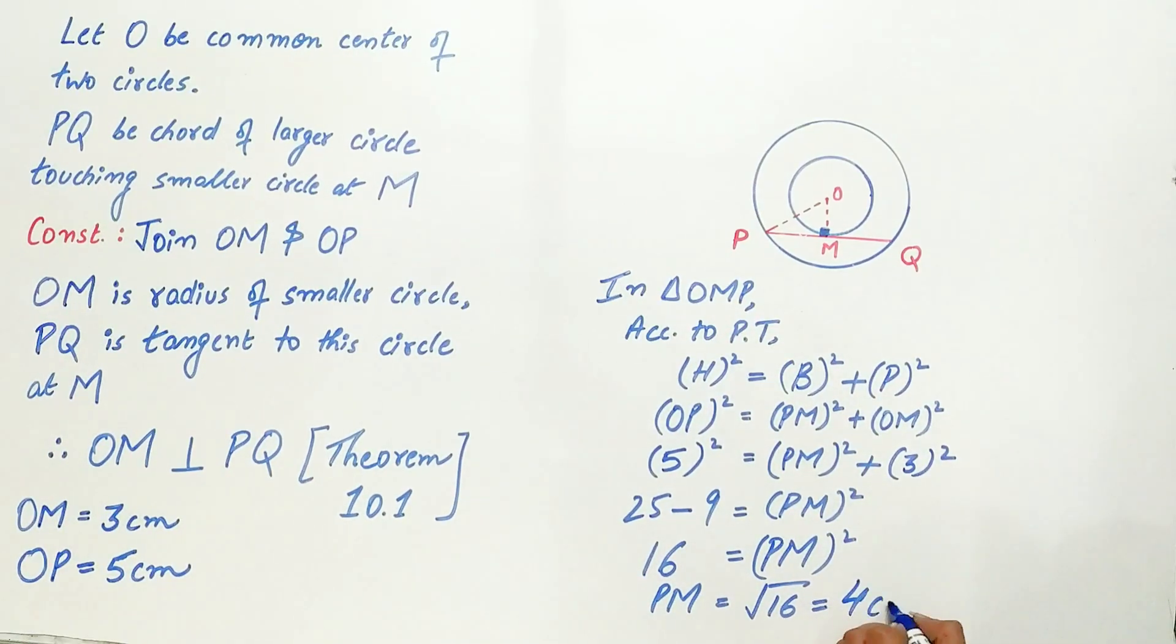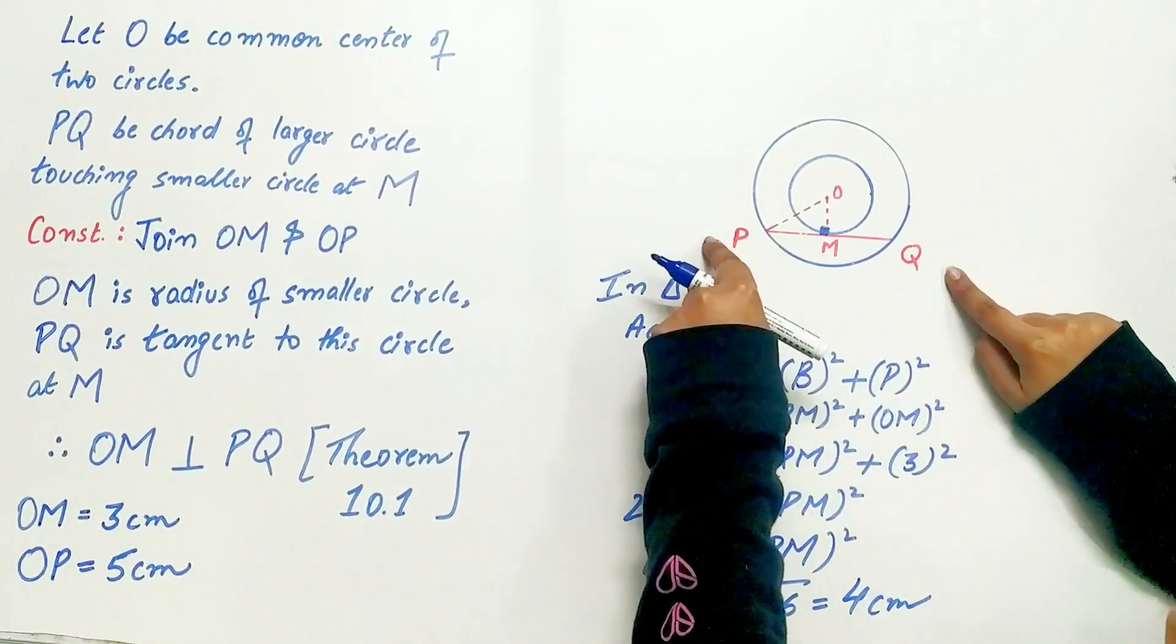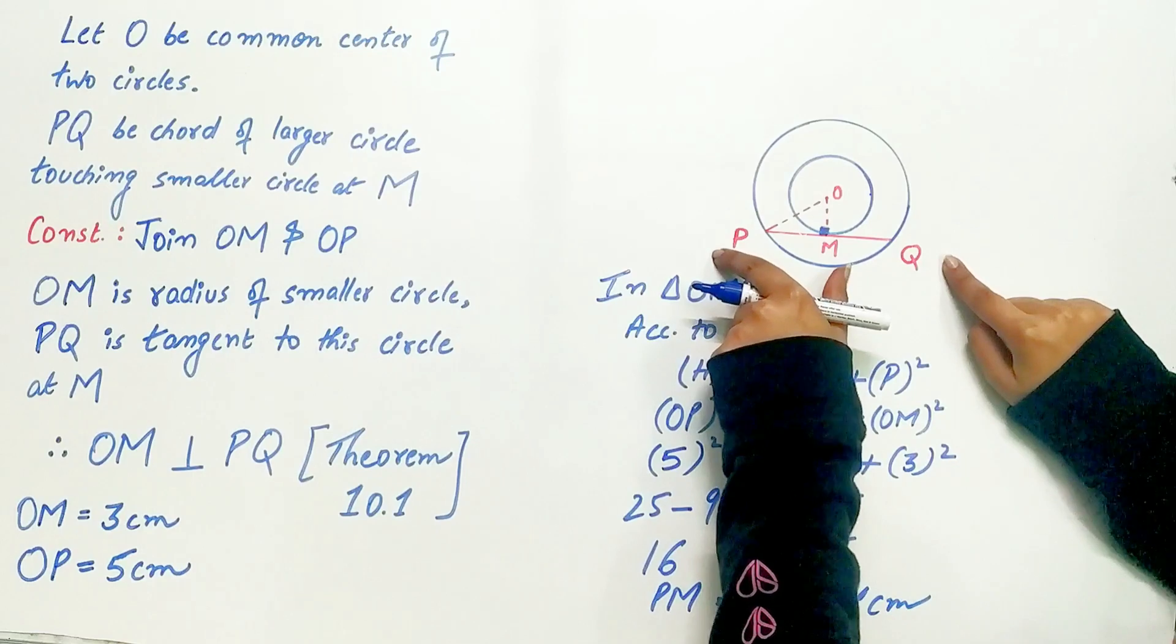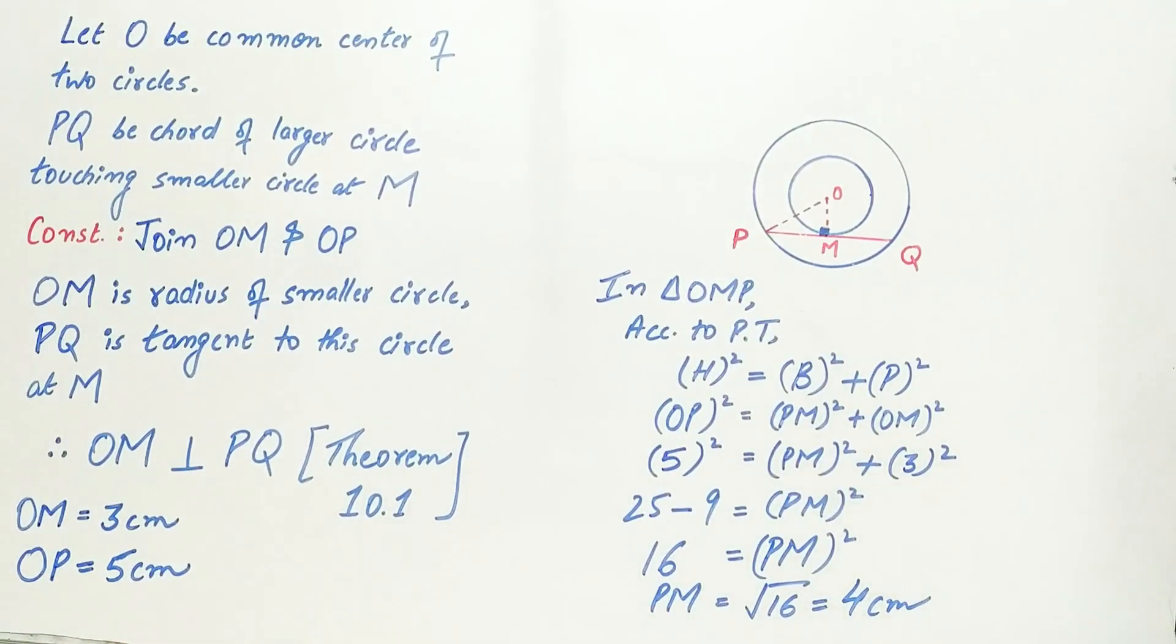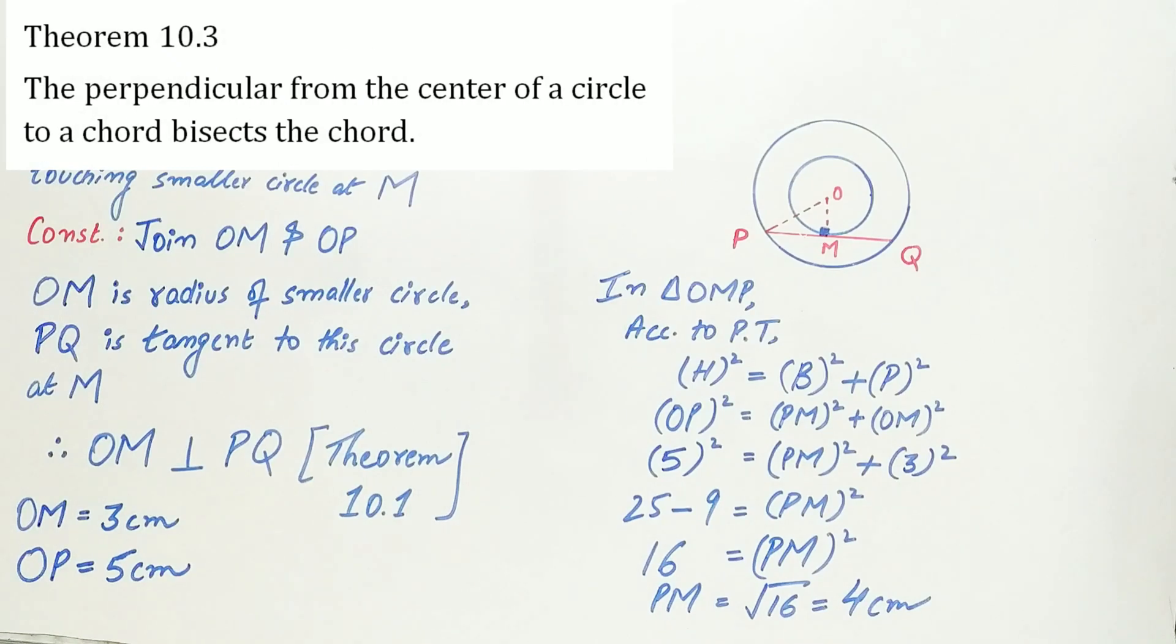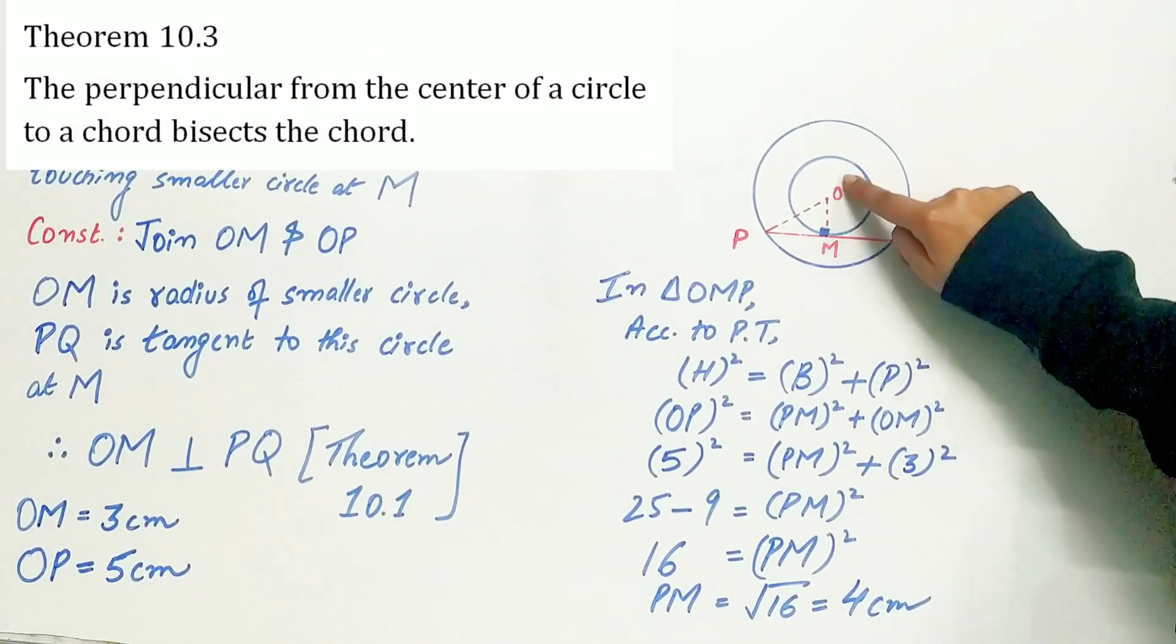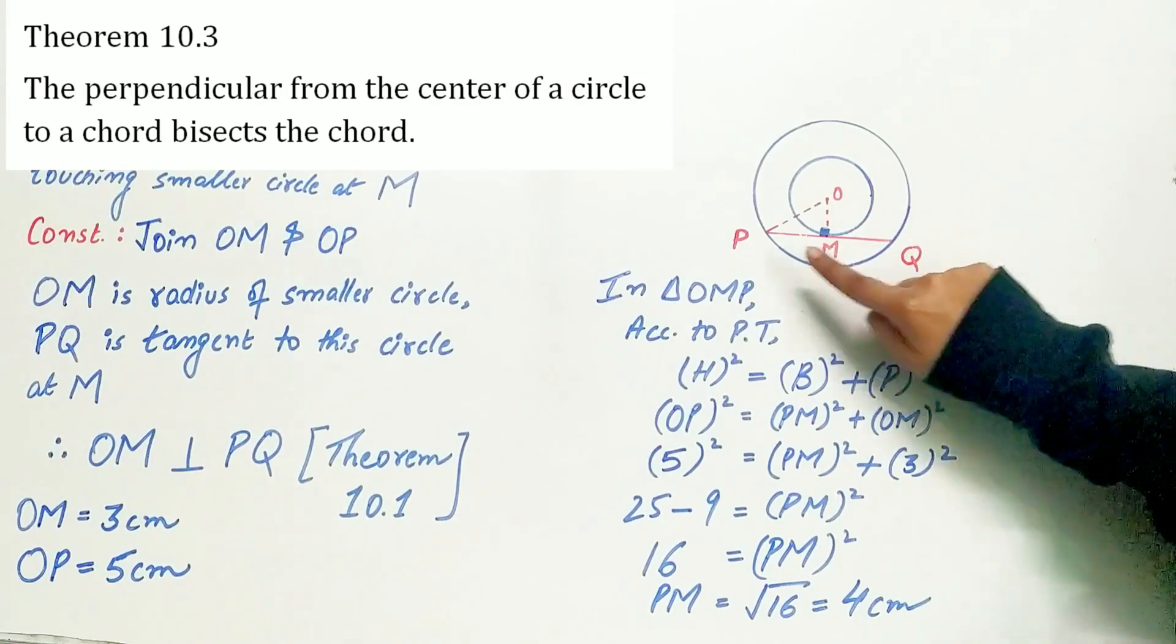We have to find the length of PQ but we know the length of PM. Remember in class 9 we have studied a theorem that says the perpendicular from the center of a circle to a chord bisects the chord.